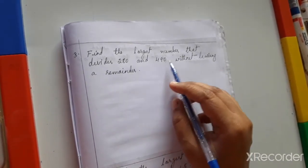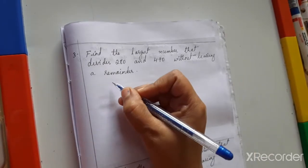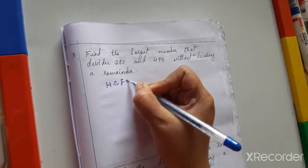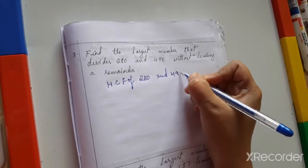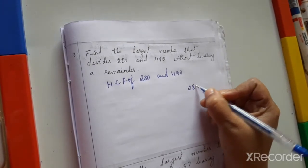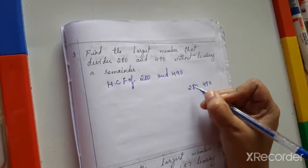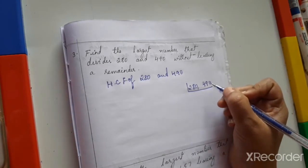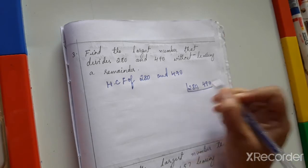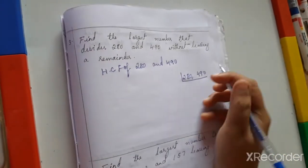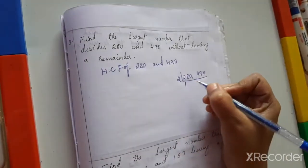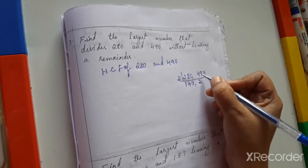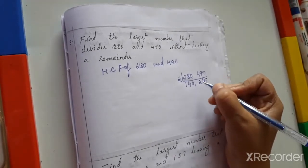Find the largest number that divides 280 and 490 without leaving a remainder — we have to find the HCF of 280 and 490. We can find them together using prime factorization. Divide by 2: 280 ÷ 2 = 140, 490 ÷ 2 = 245.